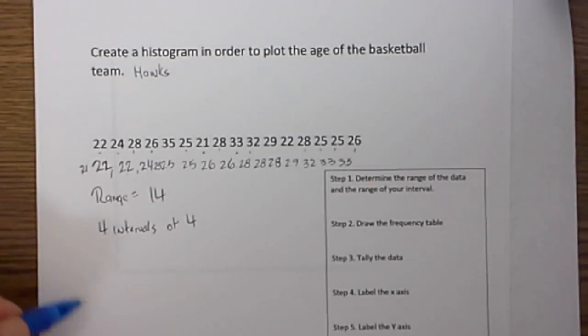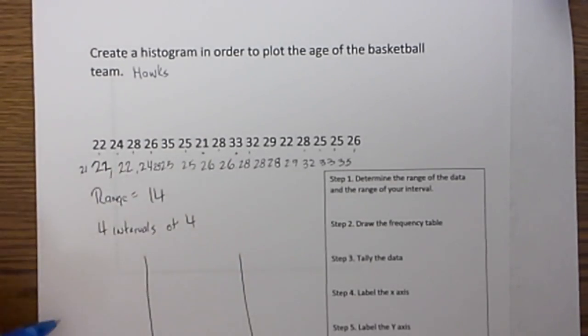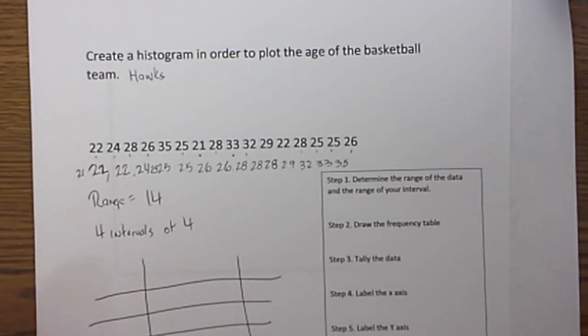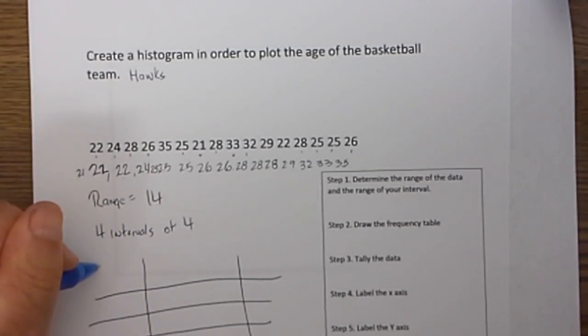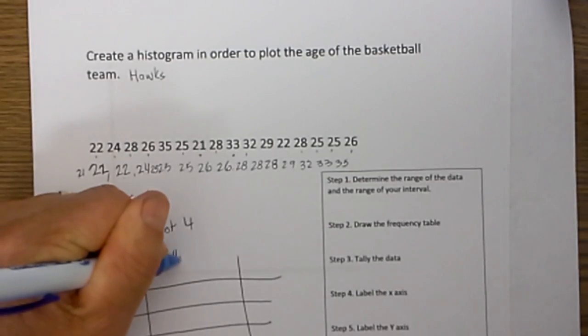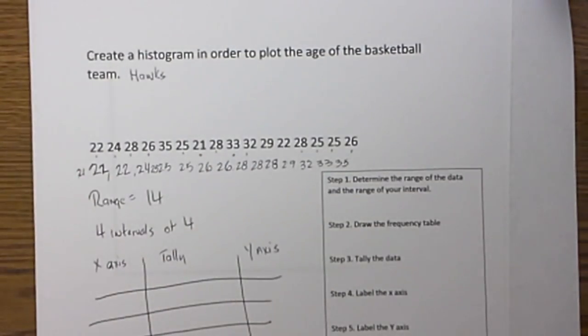Now let's draw a frequency table. Draw two lines and then draw some lines like this. This will be our x axis, or x data, this will be our tally, and this will be our y axis.